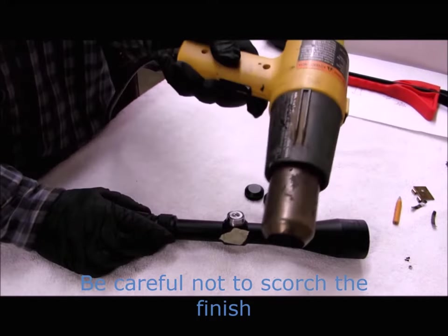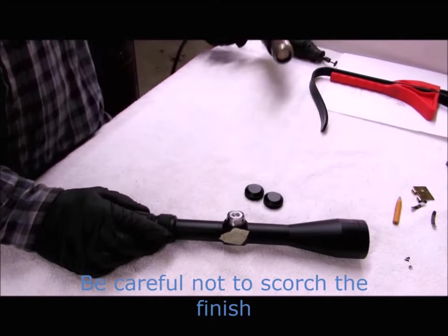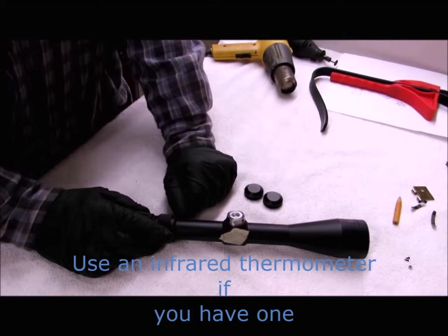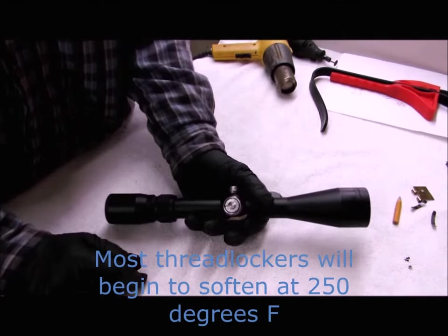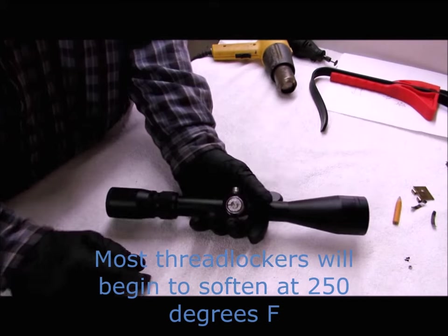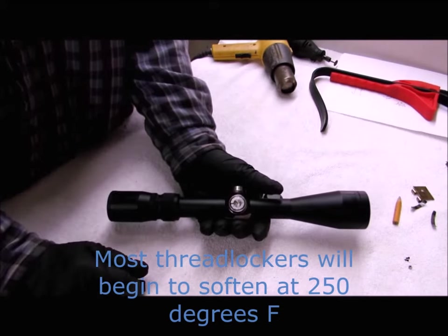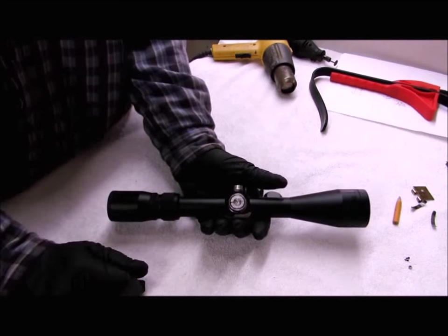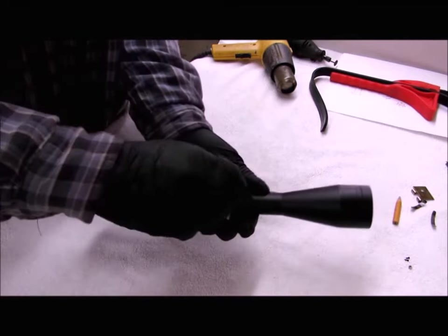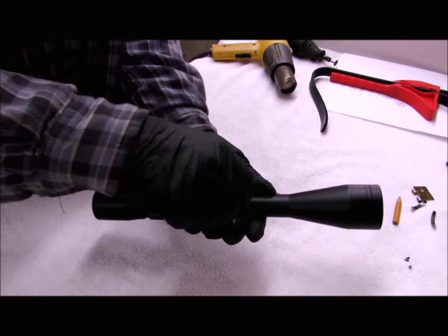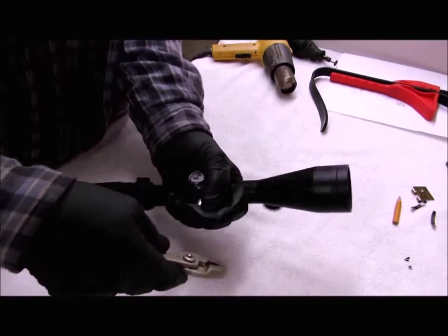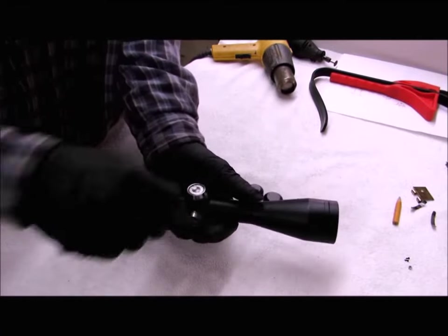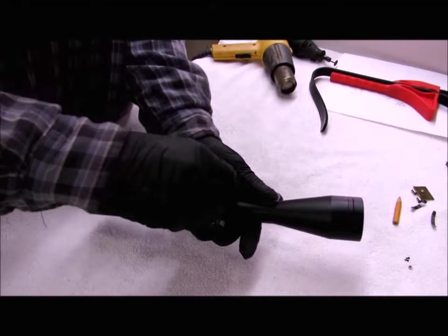For a heat source, I use the electric heat gun. You can use an open flame like a propane torch. The key is don't try to bring the temperature up suddenly. Gradually heat it up and don't stay in one spot with your heat. I've already removed this turret. To break it loose, I used a pair of pliers and a piece of rubber to kind of protect it. I did mar it a little.